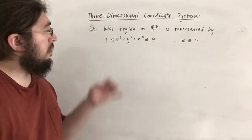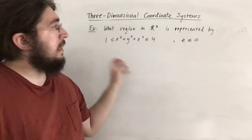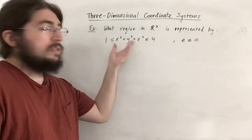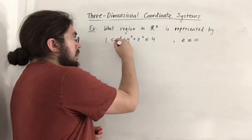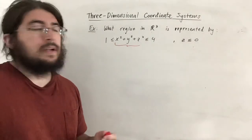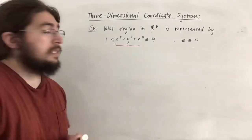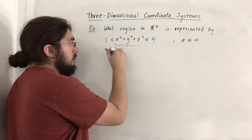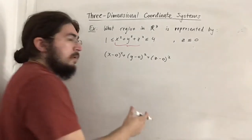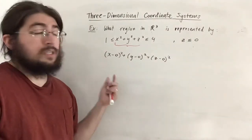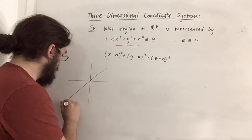Let's look at one last example to wrap our heads around surfaces in three dimensions. This last problem involves inequalities in three dimensions — we want to describe the region in R³ represented by 1 ≤ x² + y² + z² ≤ 4 and z ≤ 0. The first inequality looks like the equation of a sphere. Notice nothing is subtracted from x, y, and z, so we could think of this as x minus 0, y minus 0, z minus 0 — the center is the origin (0, 0, 0).